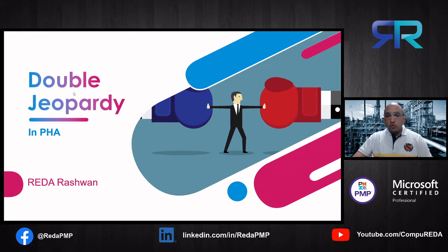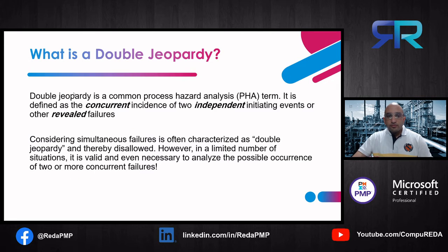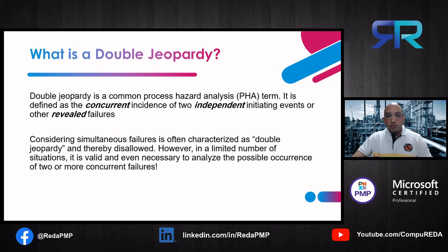First, we want to learn what is a double jeopardy. Double jeopardy is a common process hazard analysis term. It is defined as the concurrent incidence of two independent initiating events or other revealed failures. Considering simultaneous failures is often characterized as double jeopardy and thereby disallowed.